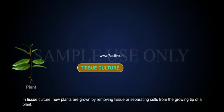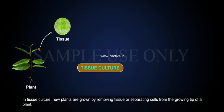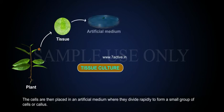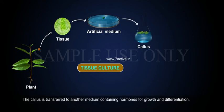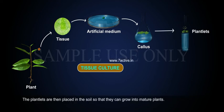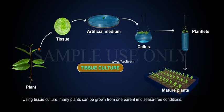In tissue culture, new plants are grown by removing tissue or separating cells from the growing tip of a plant. The cells are then placed in an artificial medium where they divide rapidly to form a small group of cells called a callus. The callus is transferred to another medium containing hormones for growth and differentiation. The plantlets are then placed in the soil so that they can grow into mature plants. Using tissue culture, many plants can be grown from one parent in disease-free conditions.